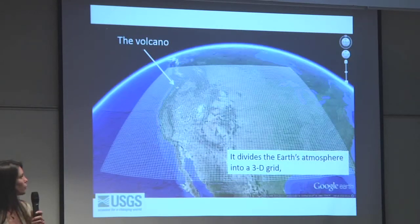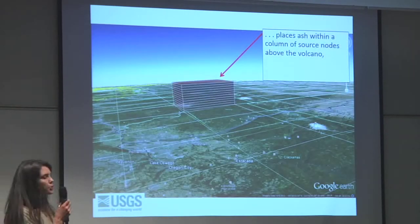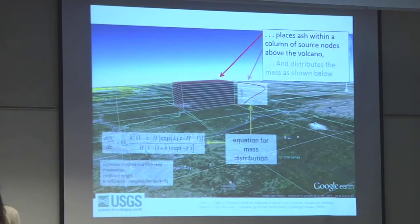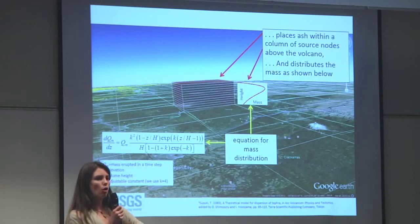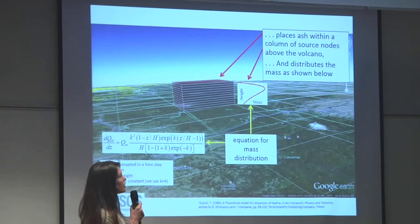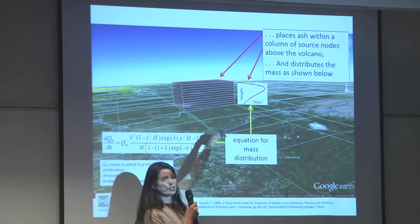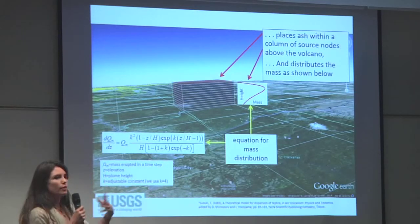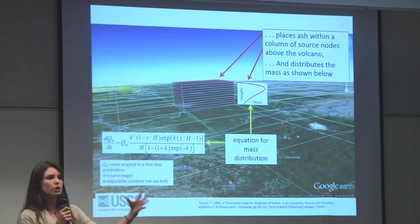The code divides the atmosphere into a 3D grid, and the eruption is placed into source nodes over one of the cells. Since it doesn't resolve the rise height of the volcanic plume, to give it a distribution of mass over the volcano it's initialized with a Suzuki distribution, which assumes more mass is concentrated at the top of the plume — like the umbrella. You can adjust the parameters to make it more of a vertically homogeneous column of ash, or something much more umbrella-like.